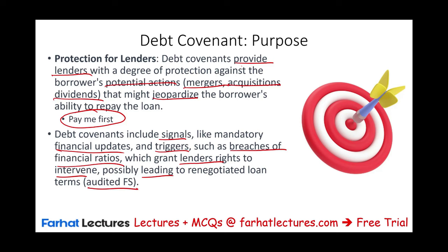The debt covenant gives us indicators about what's going on with the client. When they prepare financial statements with financial ratios, we consider those as signals, as indicators of what's going on with the company, which grants the lender the right to intervene and possibly renegotiate loan terms. This is why lenders ask business customers to prepare audited — or sometimes reviewed — financial statements, because they want accuracy to compute the ratios.